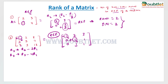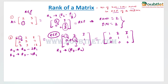To make that element zero, we apply the operation R3 minus R2. After applying this operation, the matrix becomes: 1, 2, 3; 0, 1, 1; 0, 0, 0. Now in the third row all elements are zero, so this matrix is reduced to row echelon form.